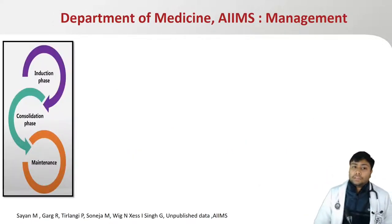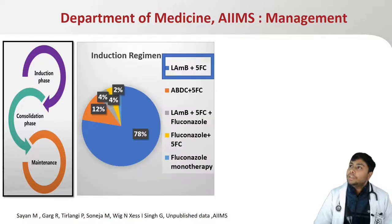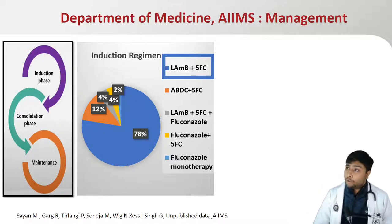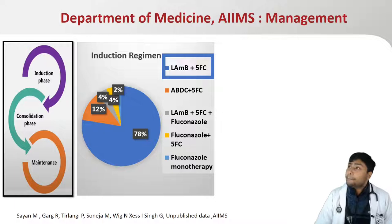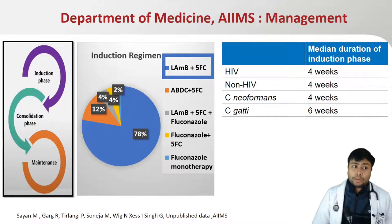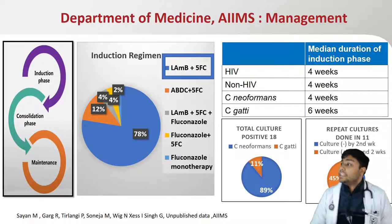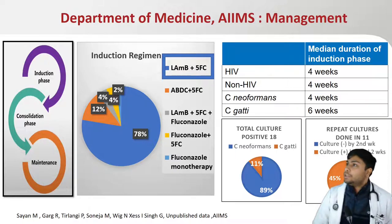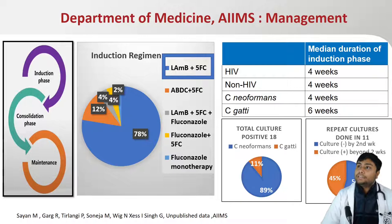Management consists of three phases: induction, consolidation, and maintenance. In induction, we need proper antifungal at proper doses to achieve good CSF concentration. We used liposomal amphotericin B and flucytosine according to guidelines in 78% of our patients, amphotericin B deoxycholate in 12%, and added fluconazole in 4% of difficult-to-sterilize cases. The median induction duration in both HIV and non-HIV groups was 4 weeks. Among 18 culture-positive patients, 11% were Cryptococcus gattii. When cultures were repeated in 11 patients, 45% remained culture-positive beyond 2 weeks, necessitating cultural negativity and symptomatic improvement before switching to consolidation.